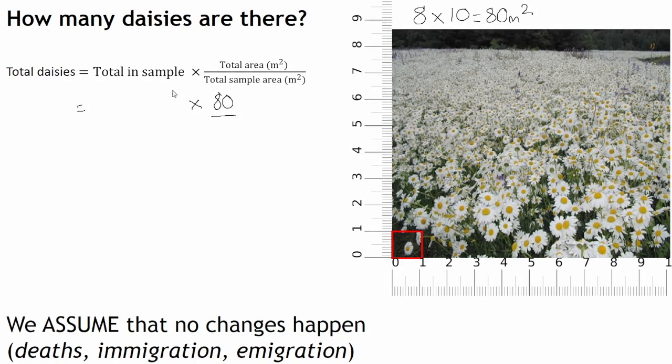Now we can start using the quadrats to find these other two numbers. We need the total in the sample and total sample area. I'm going to do a little table down here to show where we are. For each sample we take, we're going to count the daisies within that quadrat. Sample number one. The quadrat is already placed here, so I'm going to use this. In reality you would make sure it is randomly generated. This quadrat is here, this red box, meter by meter according to my scale.